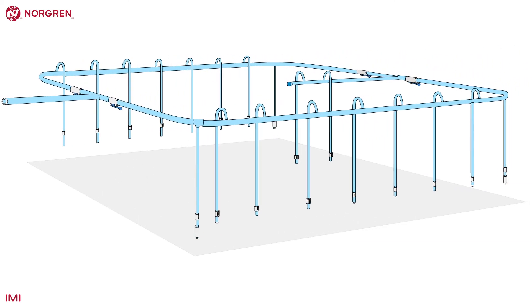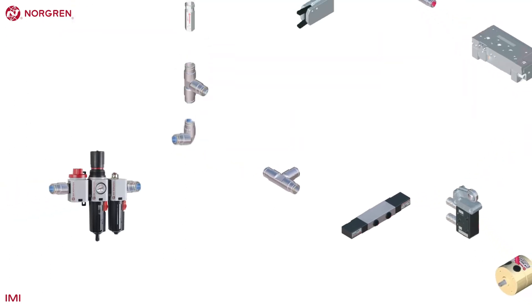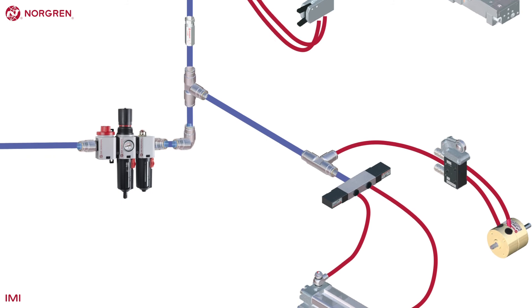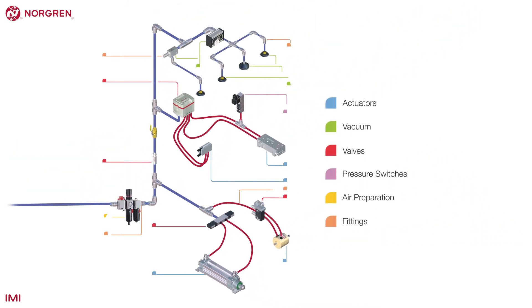Many IMI Norgren products are found at the end of these downpipes, at the point of use. Notice the air prep unit, which includes a shut-off valve. The colours in the illustration refer to different sections, which are all part of the same system IMI Norgren has used for the last 15 years.